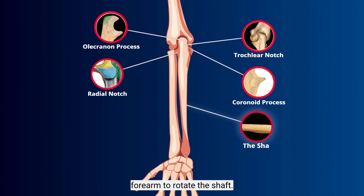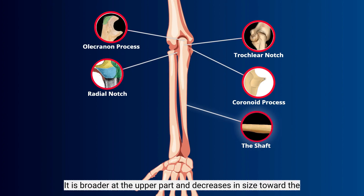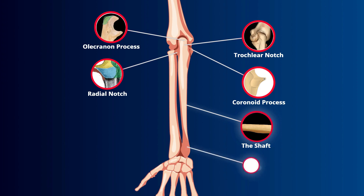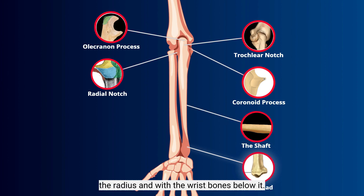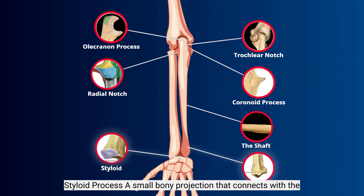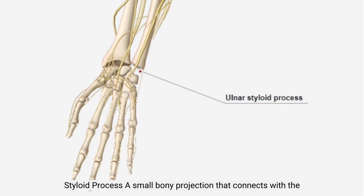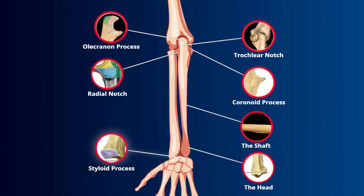The shaft is broader at the upper part and decreases in size toward the lower part. The head is a small rounded structure at the lower part which connects to the radius and with the wrist bones below it. Styloid process: a small bony projection that connects with the cartilage of the wrist joint and it helps with the flexibility and strength of the wrist.